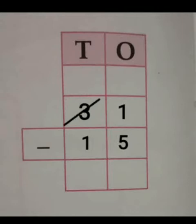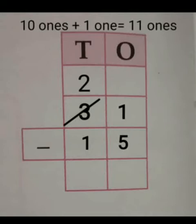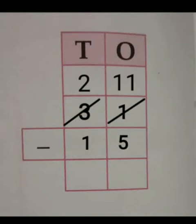Now, here 2 tens are left. Write 2 at the tens place. 10 ones and 1 one is equal to 11 ones. Write 11 at ones place. Now, subtract 5 from 11. Answer is 6. Write 6 at the ones place.